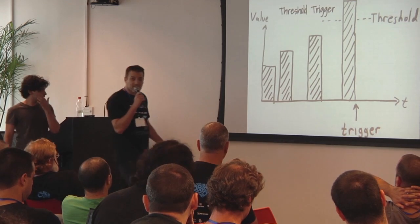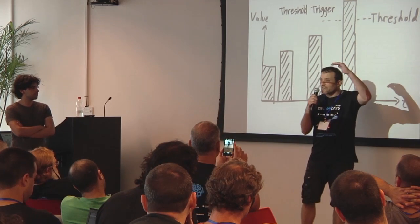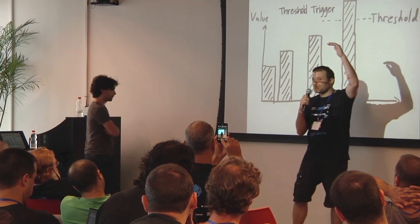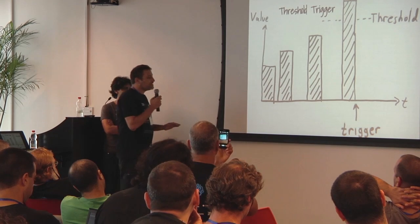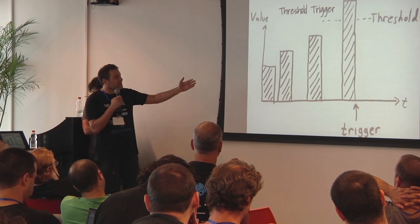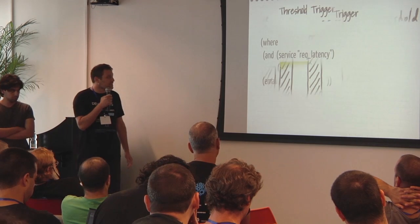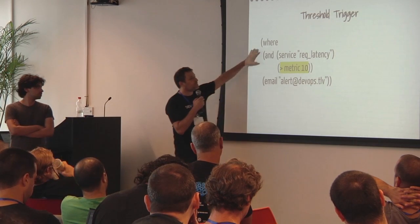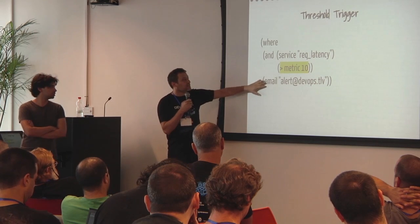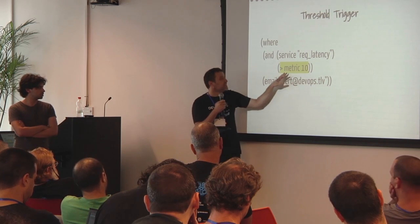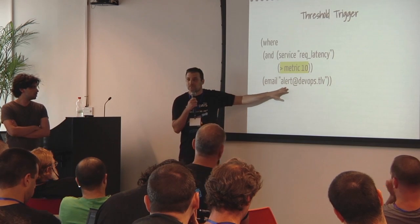If Chuck Norris is here, Riemann is here. Riemann can do anything you want, specifically trigger based on thresholds, and the code is really simple — a function that takes a condition, a predicate, and an action. So if the request latency is more than 10, then send you an email. Pretty simple.